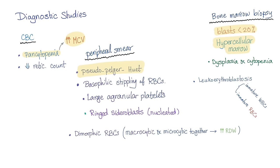To diagnose MDS: CBC, peripheral smear, and a bone marrow biopsy. On CBC, you will get pancytopenia with high MCV because immature cells are larger. Low retic count because your bone marrow cannot respond.